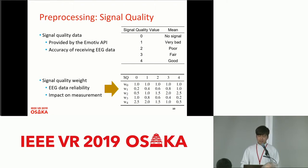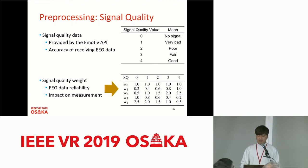In order to understand the impact on learning by signal quality, we created a set of weights as shown in this table. Weight 0 indicates an even weight. Weight 1 and Weight 2 models are designed to observe proportional influence, while Weight 3 and Weight 4 models are designed to observe inverse proportional influence.